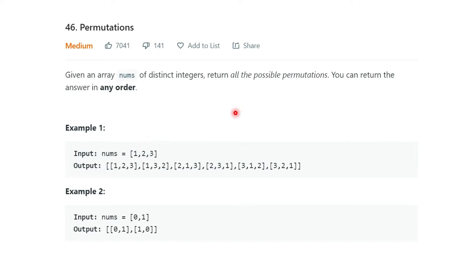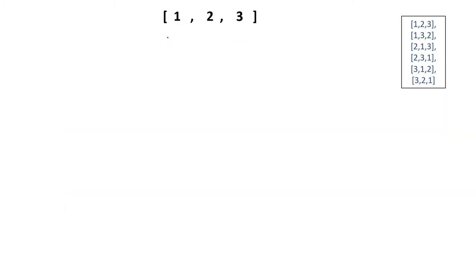So how do we solve this problem? The array given to us is [1, 2, 3] and it is guaranteed that all elements are unique. These are the possible combinations we will get as output. Now, if we think about it ourselves — not in a programming manner — how can we create all these combinations? We have to follow the choices.